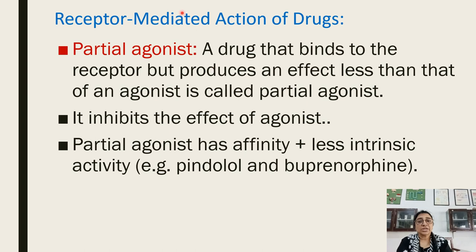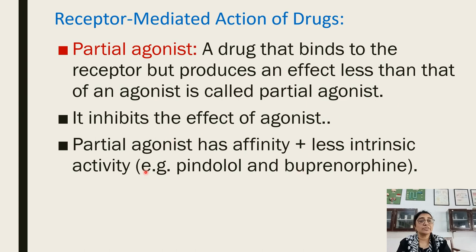A partial agonist is a drug that binds to the receptor but produces an effect less than that of the full agonist. It inhibits the effect of the agonist, having affinity but less intrinsic activity than the agonist. Examples are pindolol and buprenorphine.